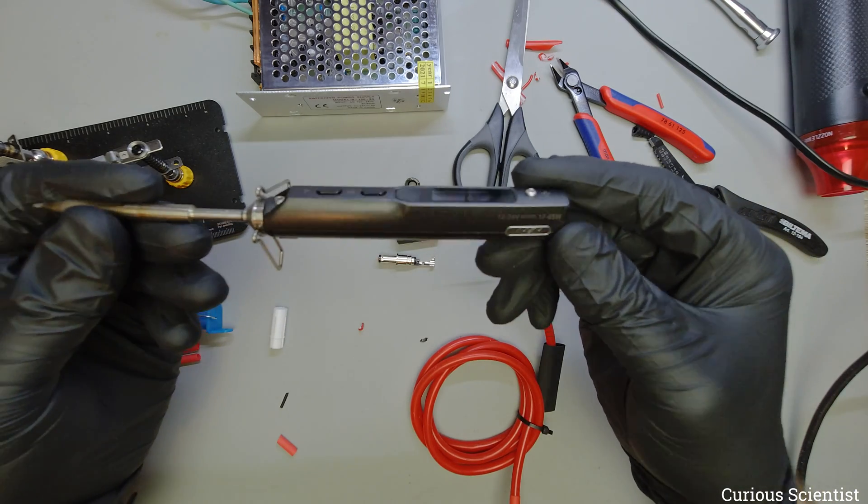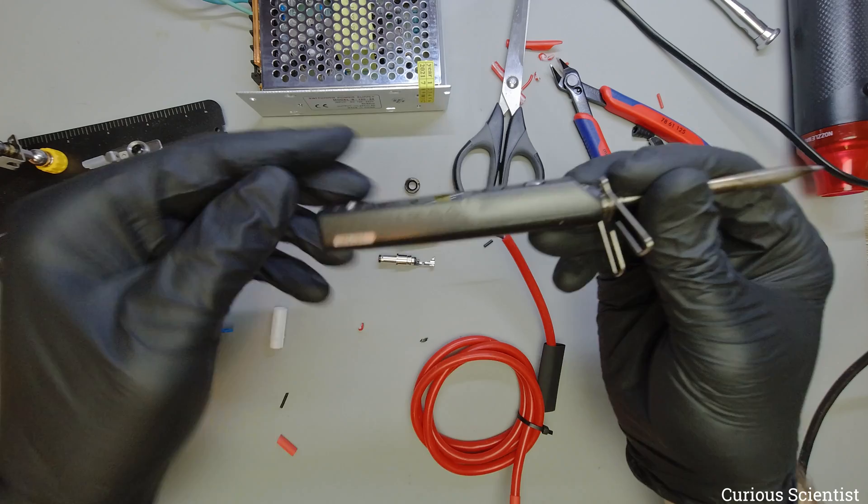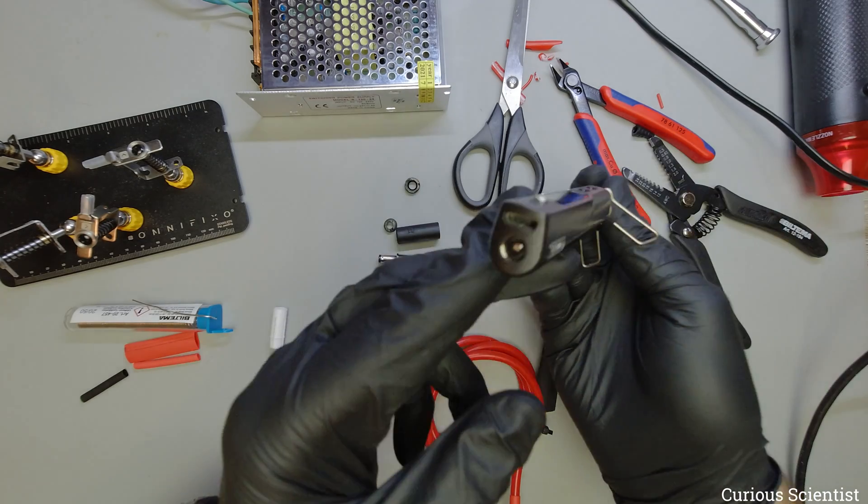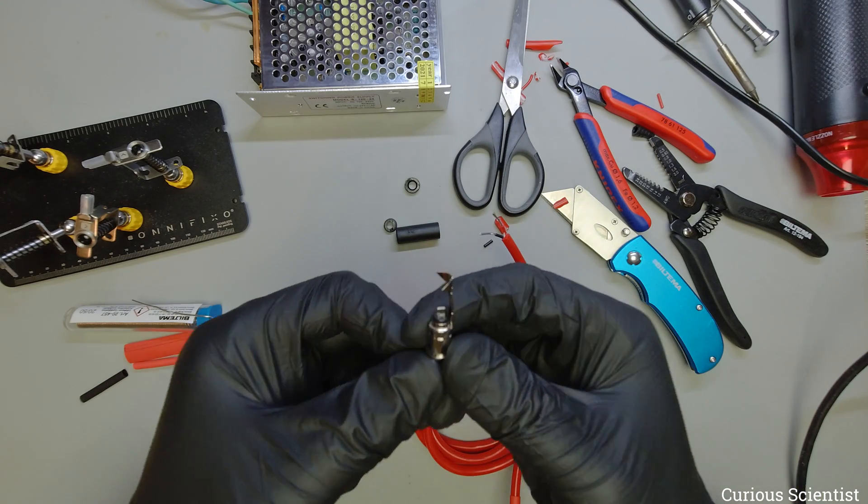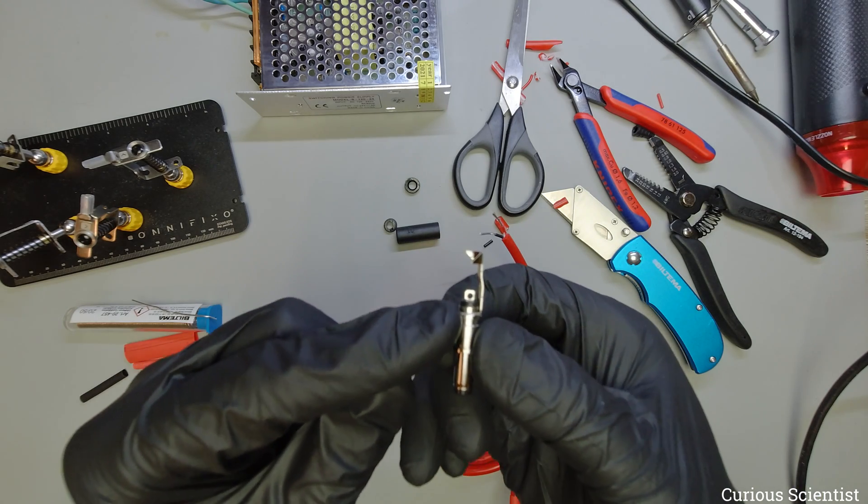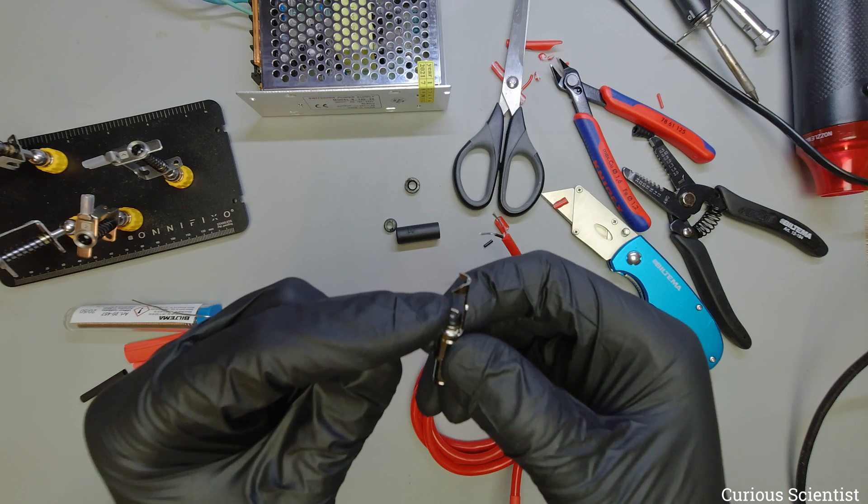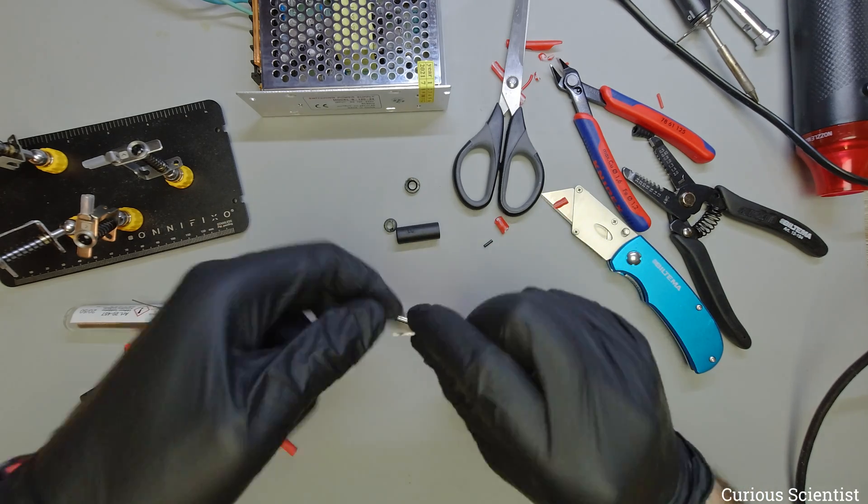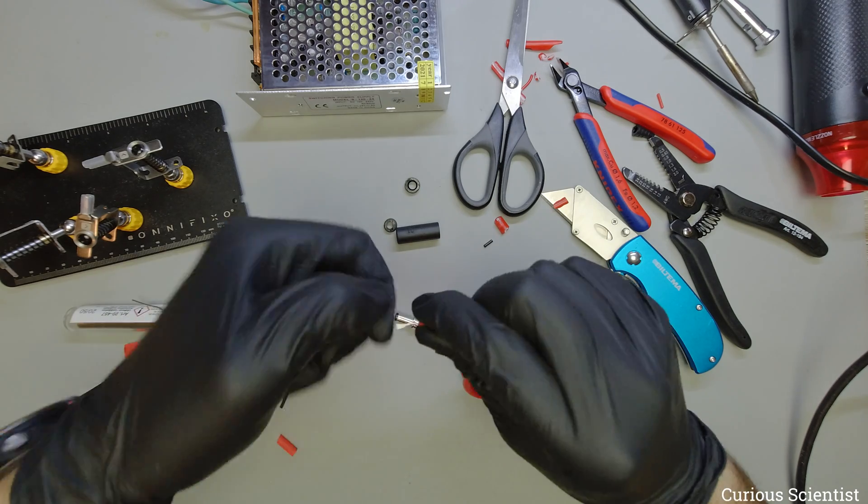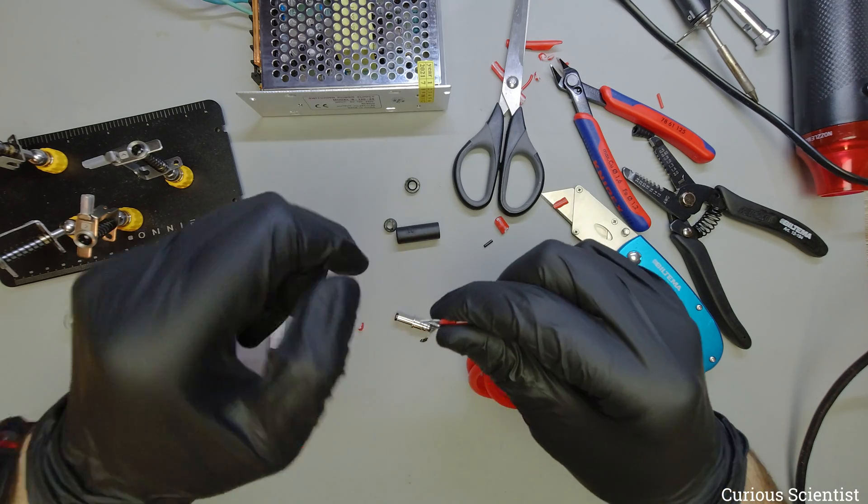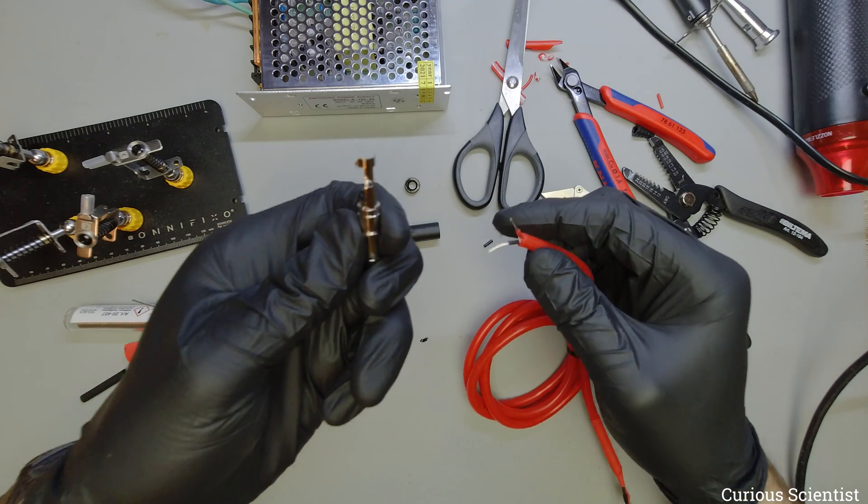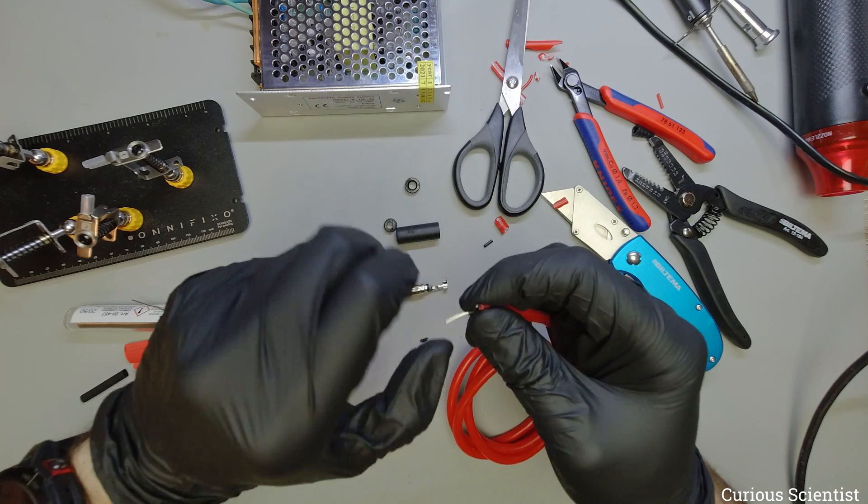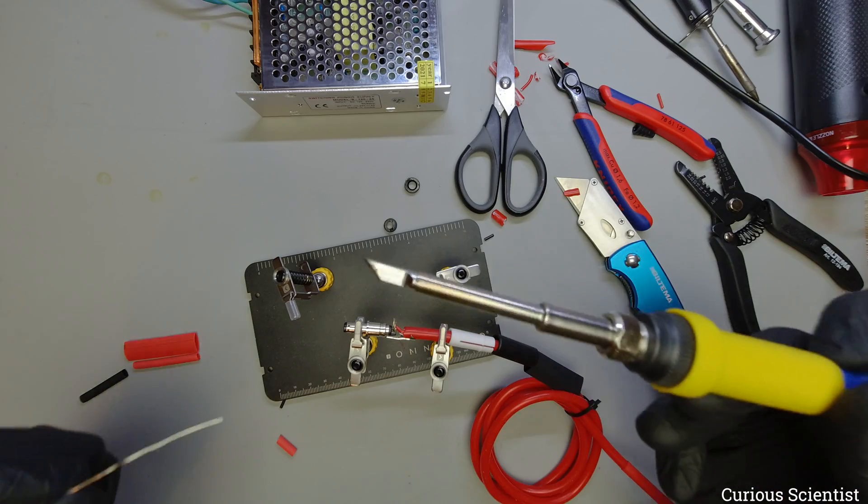So coming back to this TS-100 soldering iron, according to the pictogram here this is a center positive DC jack which means that here we have the center with this eyelet here so that has to be connected to the positive or in my case the red wire. So I will connect that to the red wire and obviously the other wire, the black one, goes here which is the negative side of this thing.